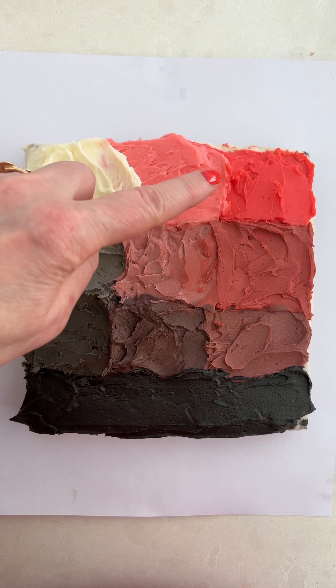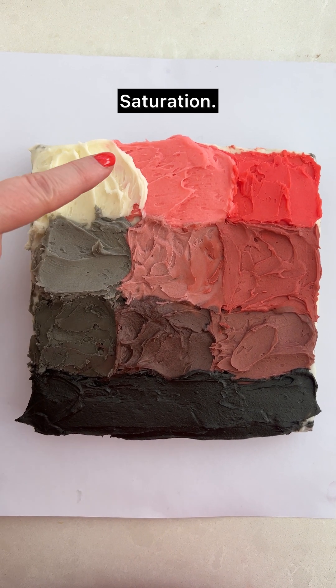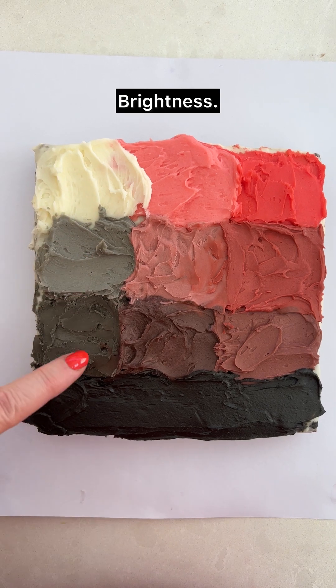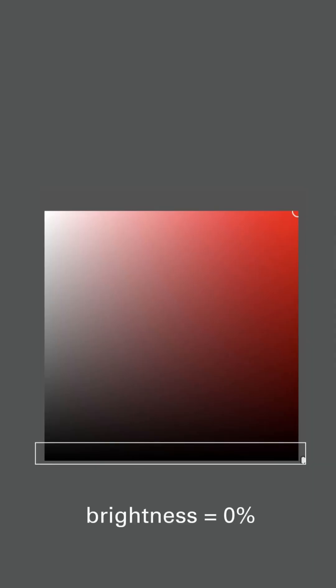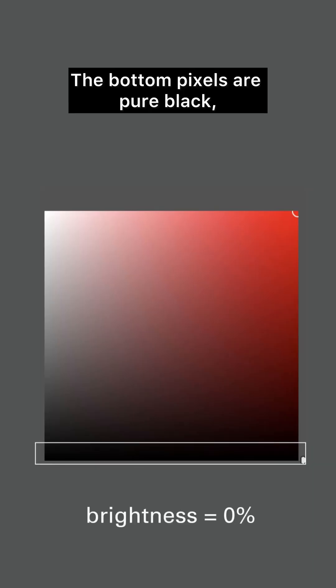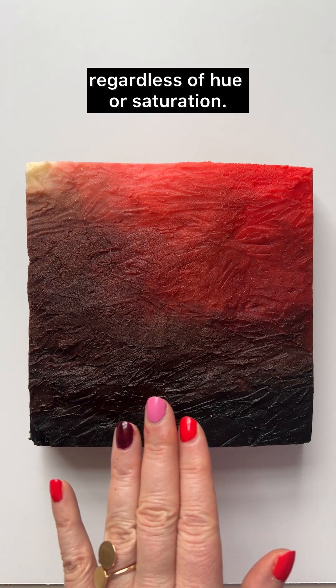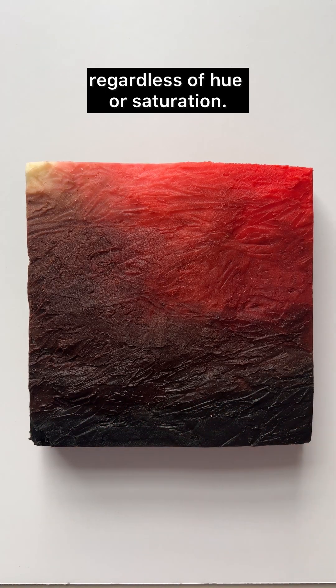Hue, Saturation, Brightness. The bottom pixels are pure black regardless of hue or saturation.